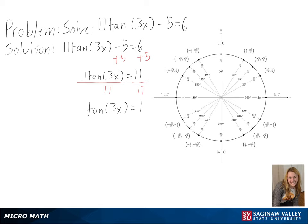Next we need to look at a unit circle to see where tangent does equal 1, and we can see here we will get pi over 4 and 5 pi over 4 as our solution.